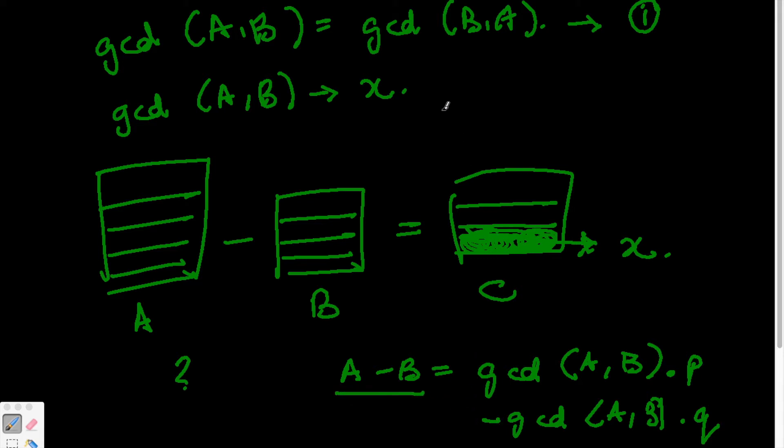So if you take these quantities it comes out to be A-B equals gcd(A,B) times (p-q). So that means A-B is in fact divisible by gcd(A,B).